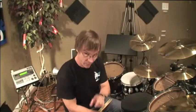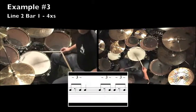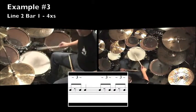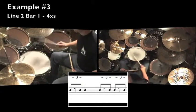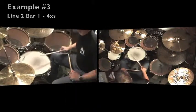Now let's look at the first measure of the second line. Let's talk through what's going on first before we try and play it. First and last triplet of beat one, quarter note on beat two, first and last triplet for beat three, and again the first and last triplet for beat four. And here's a look at line two.